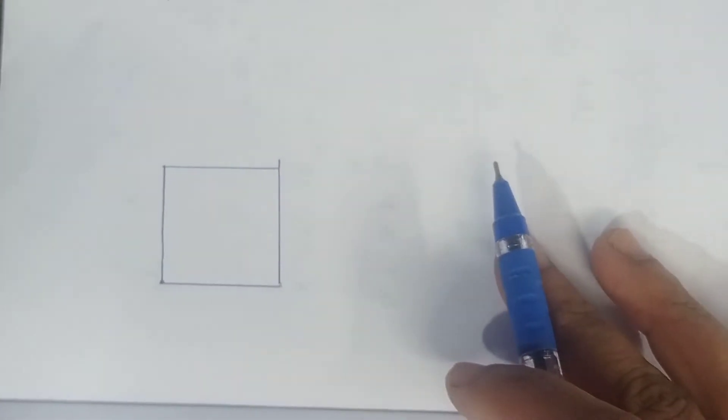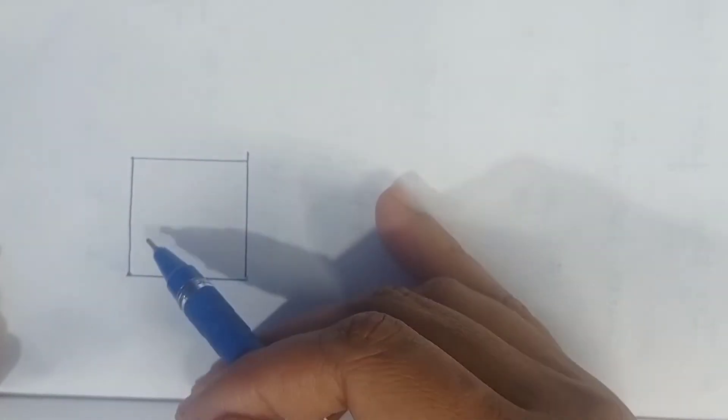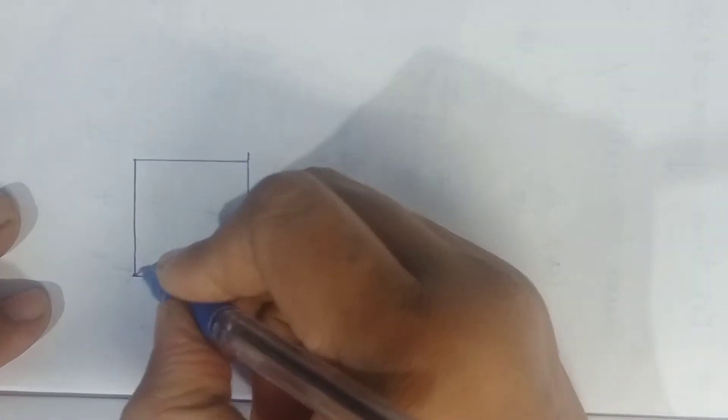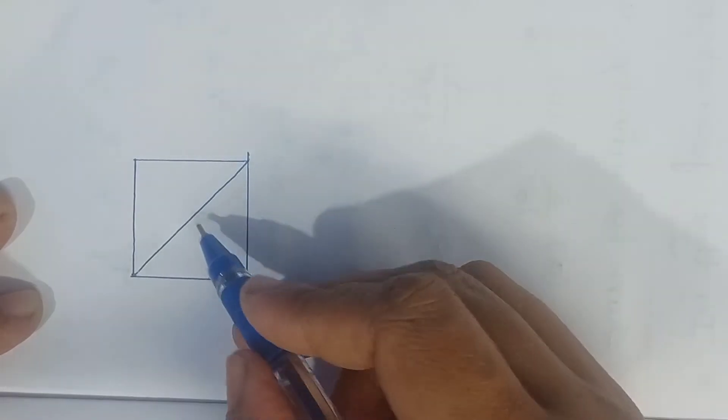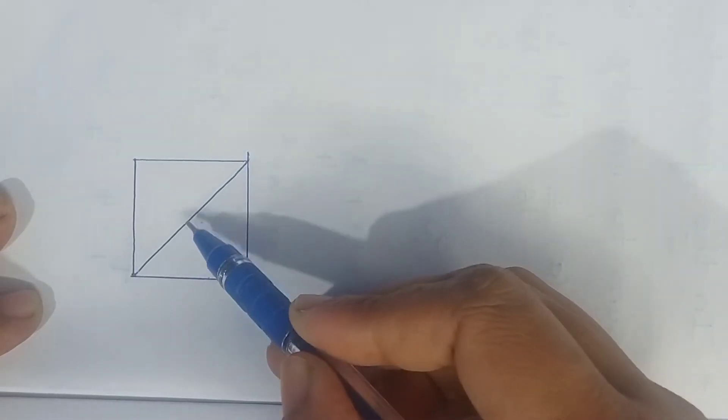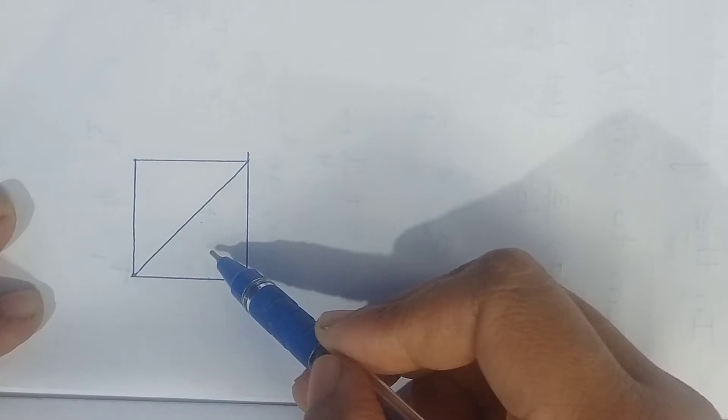See here, here we have a square. If you draw a line like this, it will become a line of symmetry and this line divides the square into two equal halves.